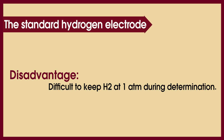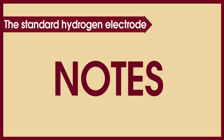These previous problems make it difficult to prepare the standard hydrogen electrode. Now some important notes about it: one, it is a reference electrode; two, it is a type one electrode; three, the shorthand notation describes that the platinum block carries hydrogen gas.